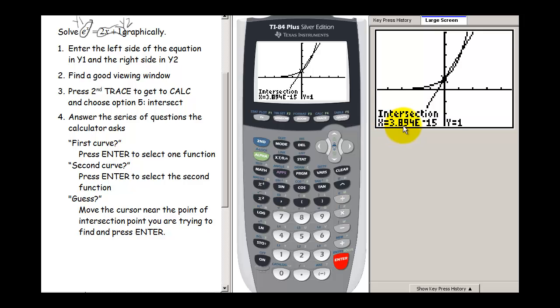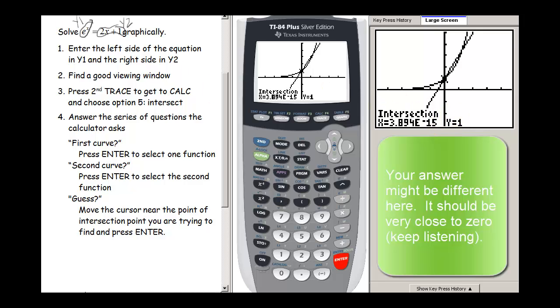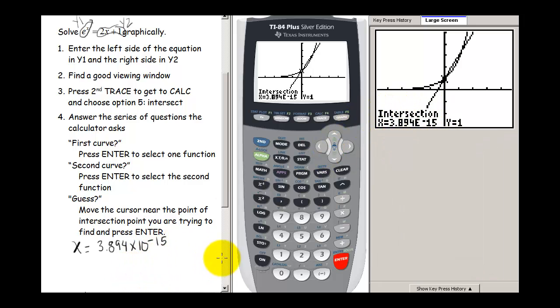And I get x equals 3.894e negative 15. So what that is telling us is that our solution is at about x equals 3.894 times 10 to the negative 15. That's in scientific notation. That's the calculator's shorthand for scientific notation.